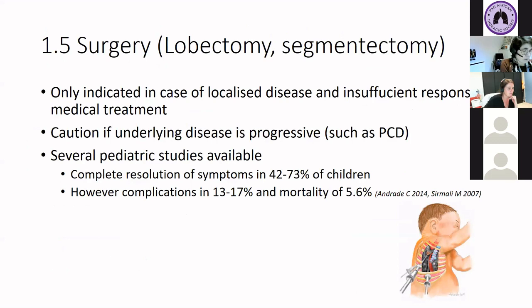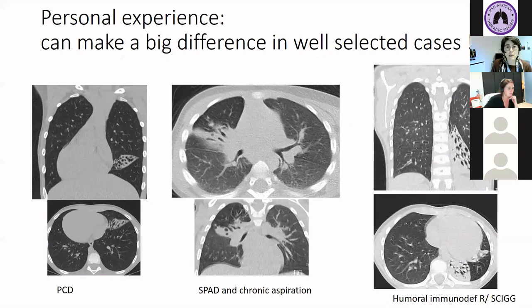Surgery — lobectomy or segmentectomy — is only indicated in cases of localized disease with insufficient response to medical treatment, and you should be very cautious if the underlying disease is progressive, such as in PCD. There are some pediatric studies showing complete resolution of symptoms in half to three-quarters of the children, but there are some complications and even mortality, so you really have to consider carefully. Our personal experience is that it can make a big difference if you select cases well, including cases of immunodeficiency with localized disease or chronic aspiration — but again, only very selective indications.